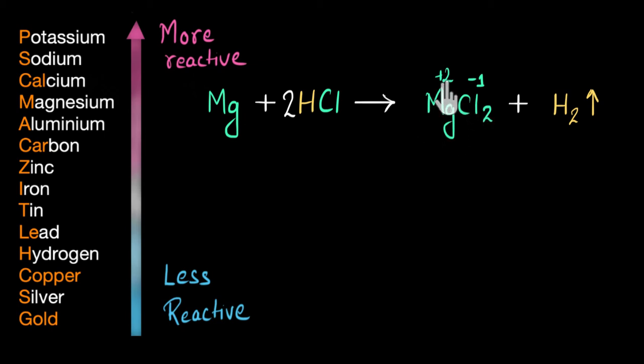magnesium has a charge of plus two, and each atom of chlorine has a charge of minus one. So in total, chlorine has minus two charge. So plus two minus two makes zero, or electrically neutral.